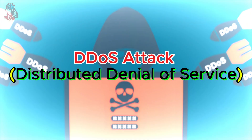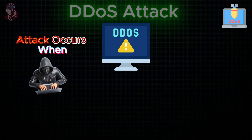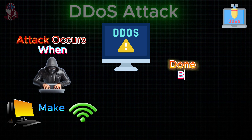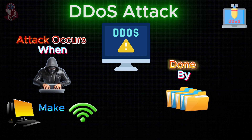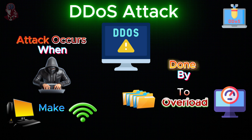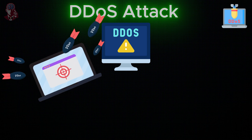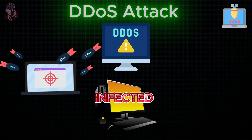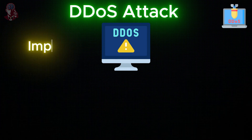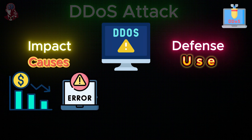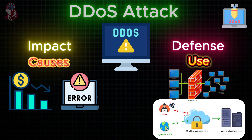DDoS Attack: A DDoS attack occurs when an attacker aims to make a computer or connection unavailable by flooding the target with excessive traffic or files to overload the system. The goal is to prevent legitimate requests from being fulfilled. Incoming traffic comes from multiple sources, often from infected computers forming a botnet. Impact: causes website downtime and potential revenue loss. Defense: use firewalls and DDoS mitigation services.